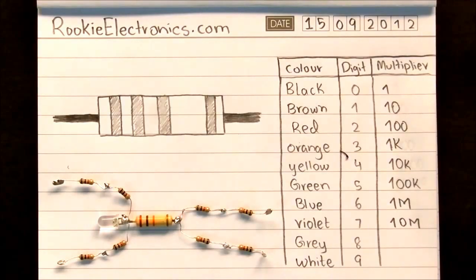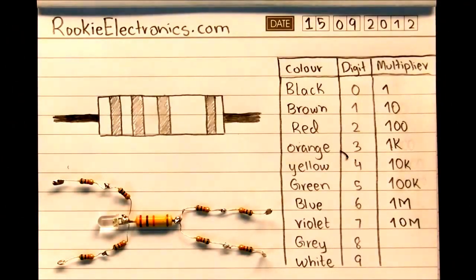So we are going to learn how the resistor color code works. Why are these bands on these resistors and do they mean anything? Yes they do.